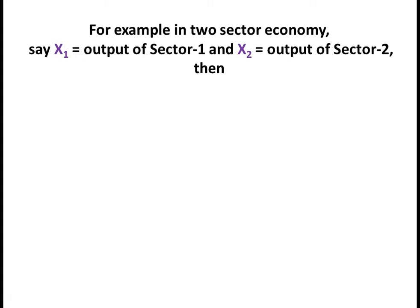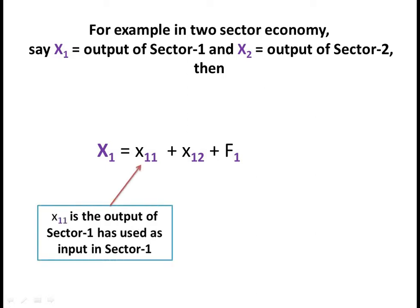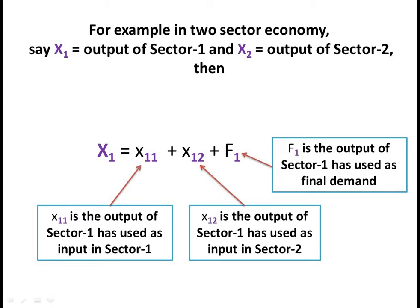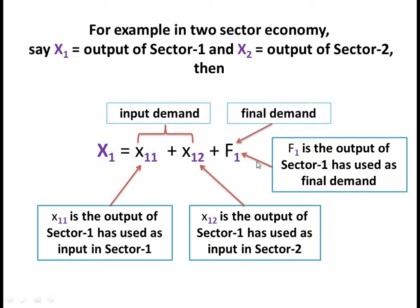For example, in a two-sector economy, let x1 be the output of sector 1 and x2 be the output of sector 2. Then x1 equals x11 — that is, output of sector 1 used as input in sector 1 — plus x12, output of sector 1 used as input in sector 2, plus f1. Here x11 plus x12 is input demand and f1 is the final demand for sector 1.